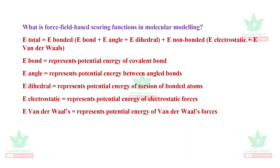E_bond represents the potential energy of the covalent bonds. E_angle represents the angle between the bonds. The dihedral term represents the flexibility of the bond, that is the potential energy of the torsion of the bonded atoms. Electrostatic represents the potential energy of electrostatic forces, and van der Waals represents the potential energy of van der Waals forces.